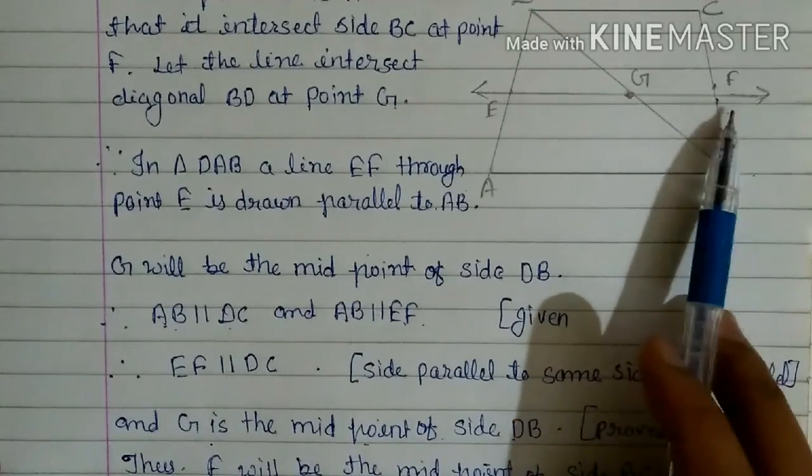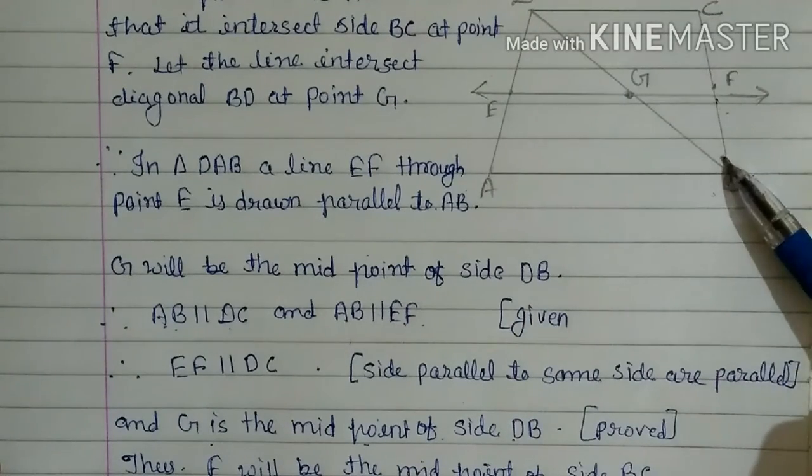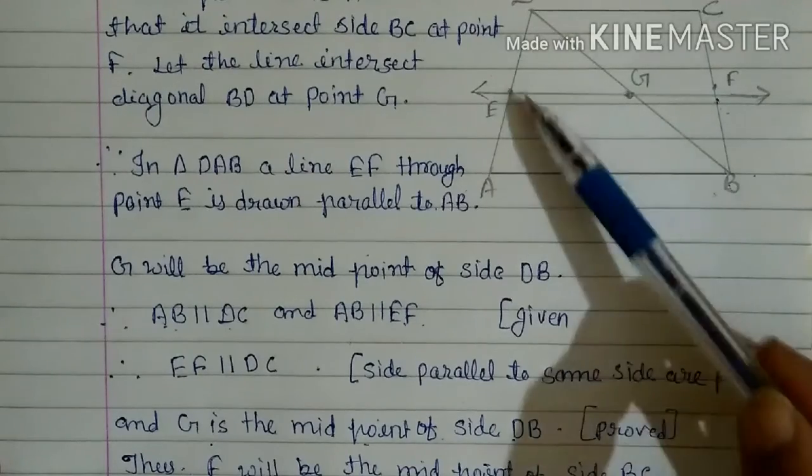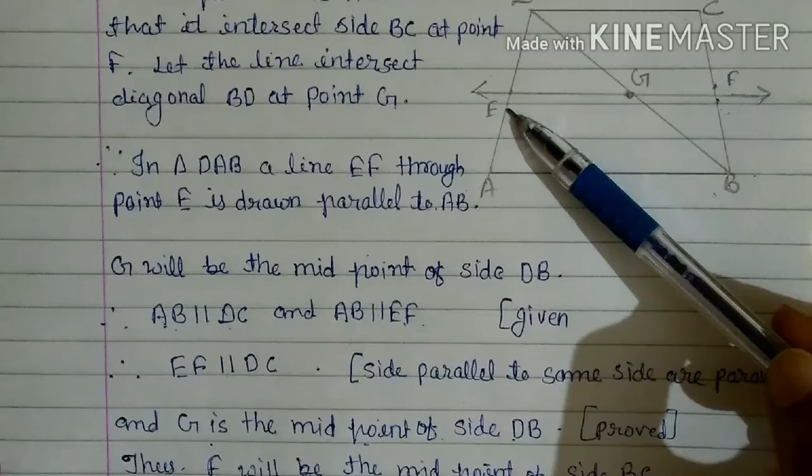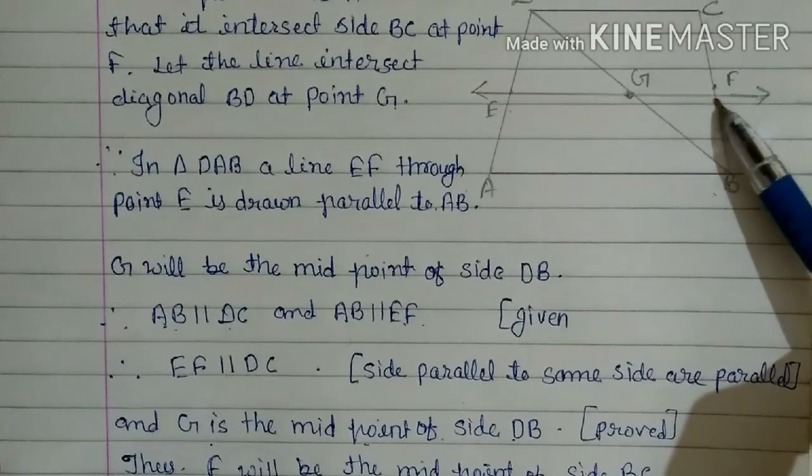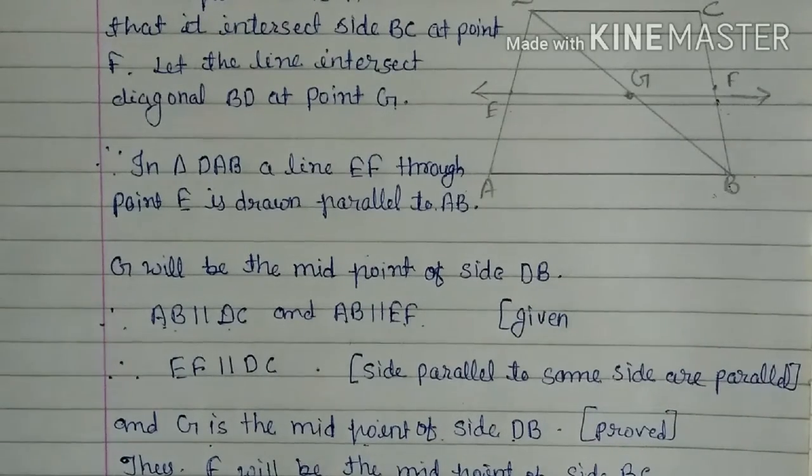F will be the midpoint of BC when this is parallel and this is parallel. Then this line, here we can see AB midpoint is E, and when this line is parallel then BC midpoint is F. So this is proved.